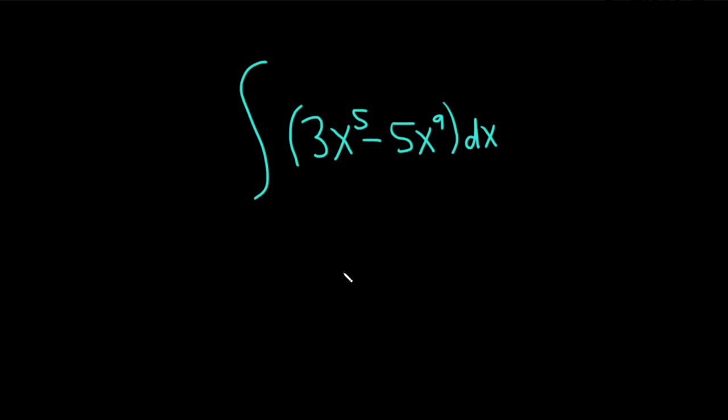In this problem, we're going to integrate 3x to the 5th minus 5x to the 9th.